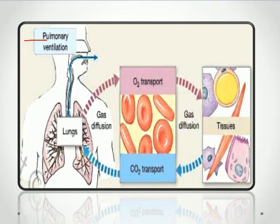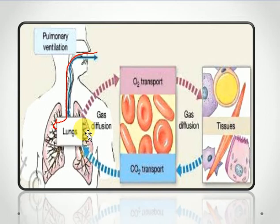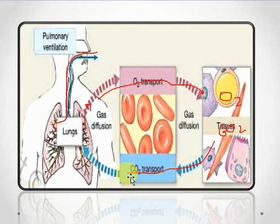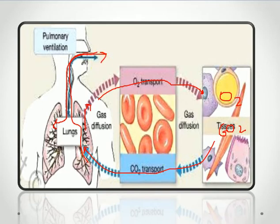When we inhale, gases move inside our lungs into the alveoli, which are richly supplied with blood vessels. Oxygen then diffuses from the alveoli into the blood, is transported to the tissues, and diffuses into the tissues by the process of diffusion. Carbon dioxide — the waste product — moves from the tissues into the bloodstream, is transported through the blood back to the lungs, and is then expelled out of the body.